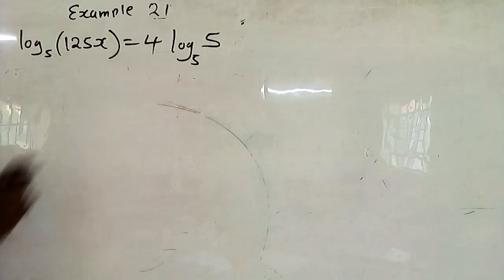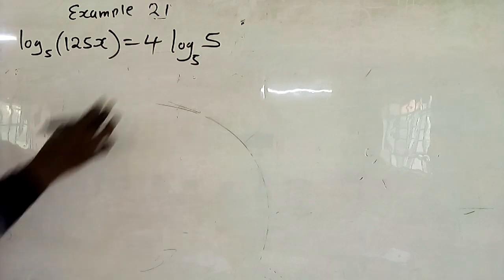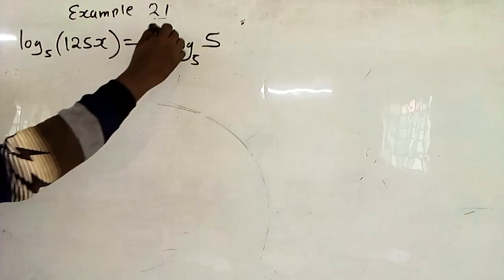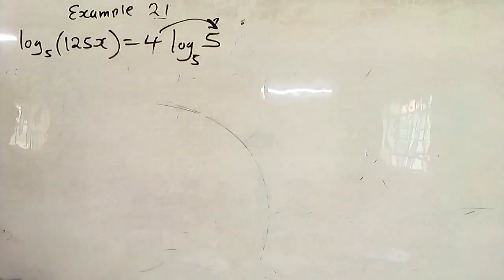So you now have same base on both sides of the equation. So what you get rid of is that coefficient. So this 4, which is the coefficient, it becomes the power.